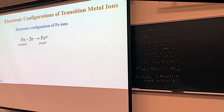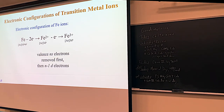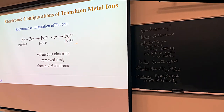If you go on from there to make iron plus 3, then you can start taking away the 3d's. Almost all the transition metals — the things you see are mostly the ions, and the configuration and behavior of them is mostly due to the d electrons. So for iron, it would be 3d. If you go down to, say, ruthenium, it would be a 4d, et cetera.